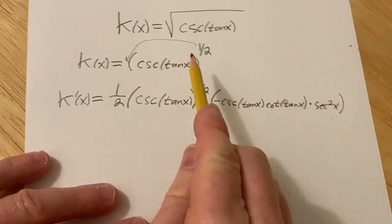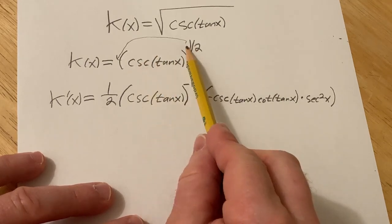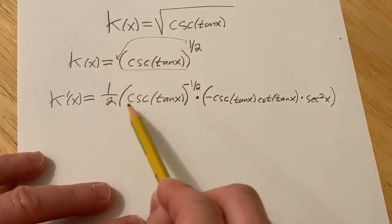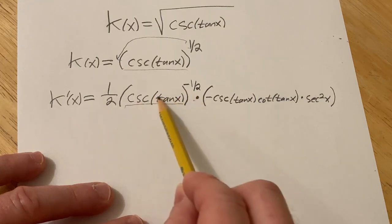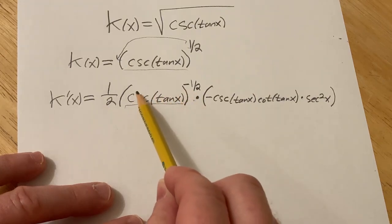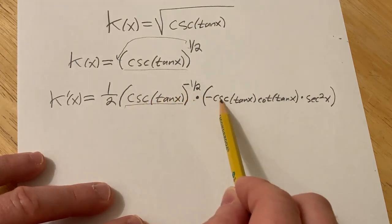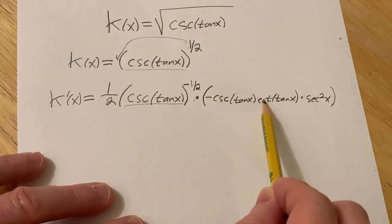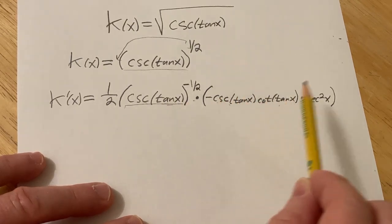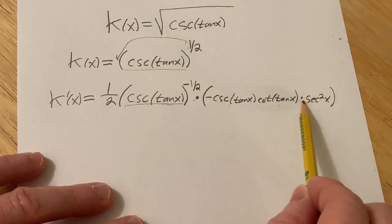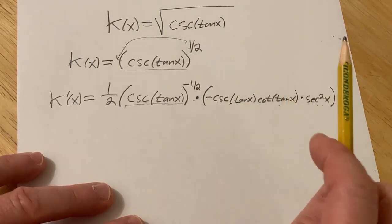Again, multiple chain rules — you take the derivative of the outside function, leave the inside untouched, times the derivative of the inside. But that's another chain rule, so you take the derivative of the outside function, cosecant, which gives you negative cosecant cotangent, you evaluate it at the inside and leave it untouched, times the derivative of tangent, which is secant squared.